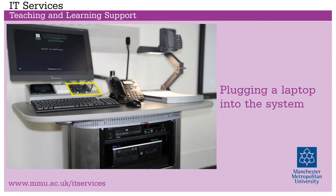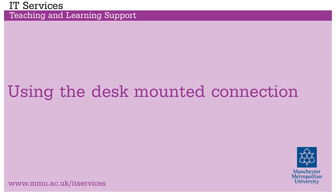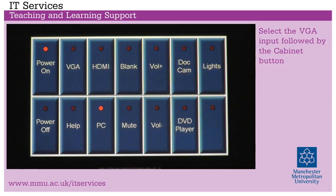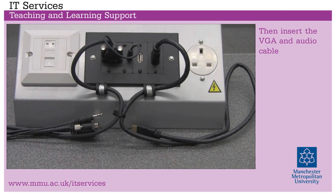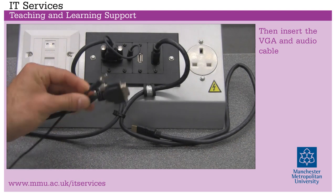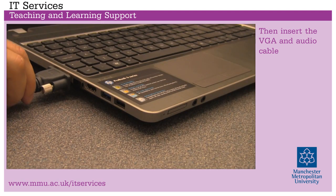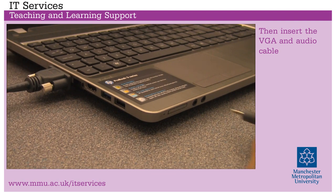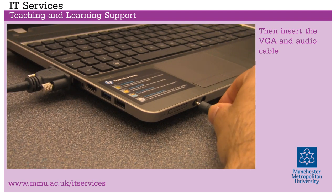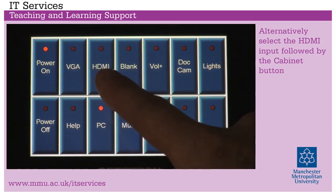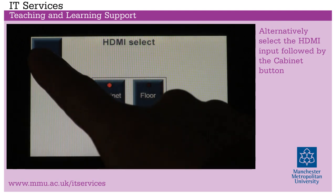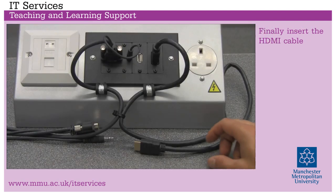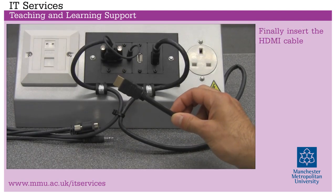Plugging a laptop into the system using the desk mounted connection. Select the VGA input followed by the Cabinet button, then insert the VGA and audio cable. Alternatively, select the HDMI input followed by the Cabinet button, then insert the HDMI cable.